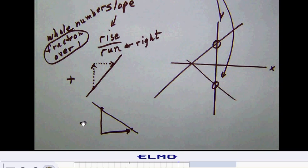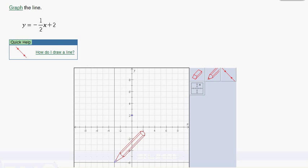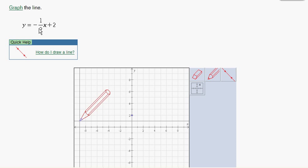This tells us that the rise is negative, so we're going to go down first from our y-intercept and then go over to the right. Looking back at our equation, we see that we have negative one-half, which means we're going to go down 1 and right 2 from our y-intercept point.